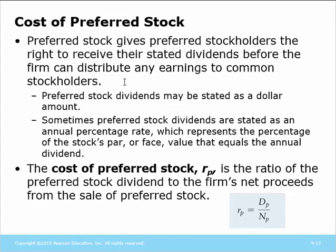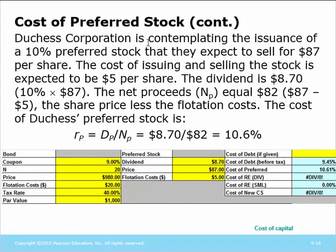Next we have the cost of preferred stock. Preferred stock dividends can be in dollars or as a percentage of par. The cost of preferred stock is a ratio — it's the dividends paid divided by the net proceeds from the sale of preferred stock. Net proceeds reflects the price at which we can sell the stock, less the cost of issuing those shares.